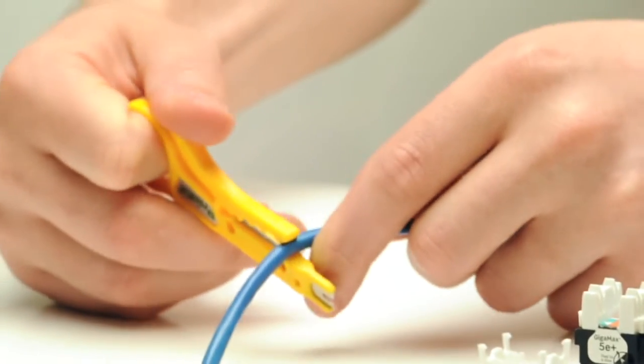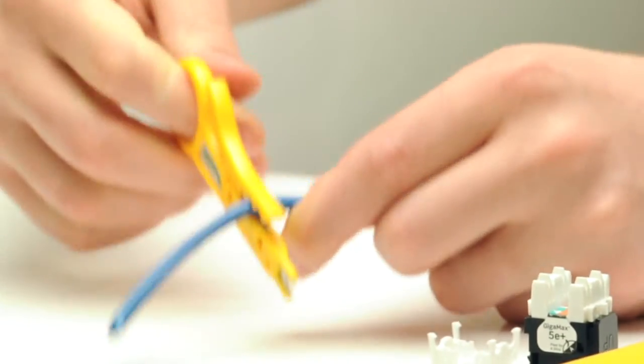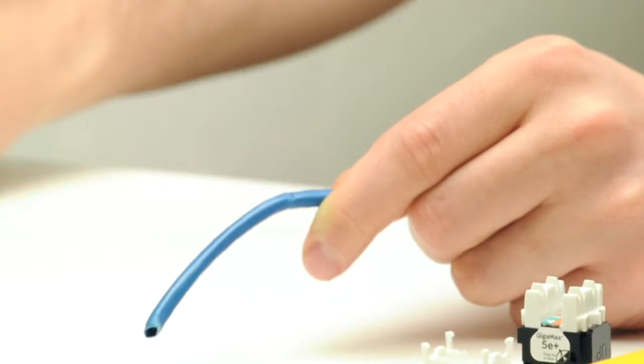The first step is to remove the jacket with the cable stripper. Removing the jacket exposes the pairs.